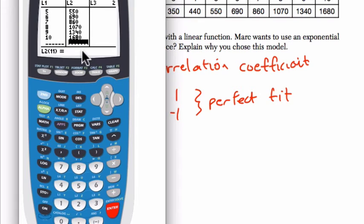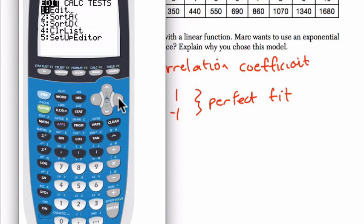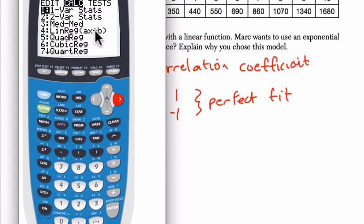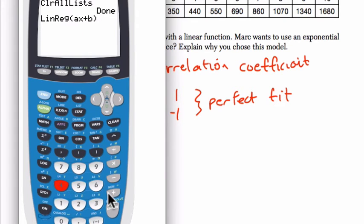Now we do our fit. So we can do both fits for the same commands, pretty much. We hit stat, then calc. Choice 4 is the linear regression. So hit choice 4. And it defaults to list 1 and list 2, but I'll enter them anyway, just to show you how that works. You enter second 1 for list 1, comma, second 2 for list 2. That tells me the first list is our x values, comma. Second list is our y values. Hit enter.